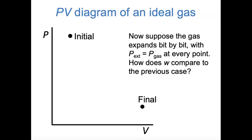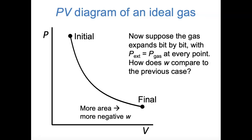Alternatively, let's think about a situation where the ideal gas expands bit by bit, where the external pressure at all points during the expansion is equal to the pressure of the gas itself. Because we're lowering the pressure bit by bit and allowing the pressure of the gas to catch up to the external pressure, the graph of the external pressure on the PV diagram is going to follow Boyle's law—the inverse relationship between pressure and volume. Work is again going to be the negative area under this curve, and compared to the previous case, that means the work in this case is going to be more negative.